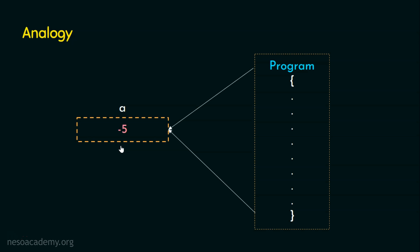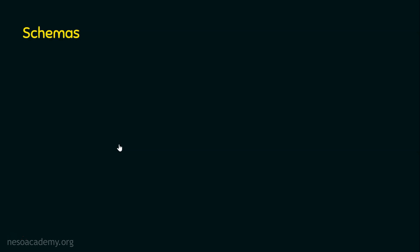With this analogy, let's step into the topic of the day. Please note that the value of the variable may change, but not the structure or the size of the variable — that is fixed. With this knowledge, let's look at the definition of schemas. What is actually a schema? It is the overall design of the database. A database is a collection of tables, where a table is a data structure with data organized in rows and columns. The overall design or structure of the database is referred to as a schema.